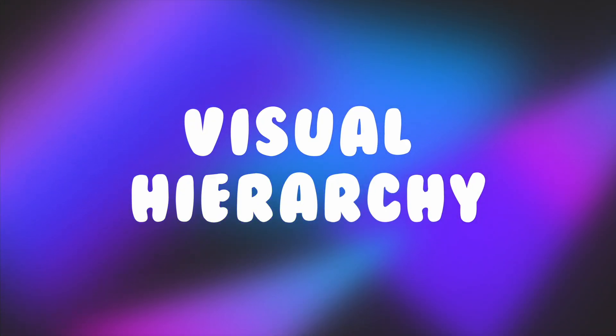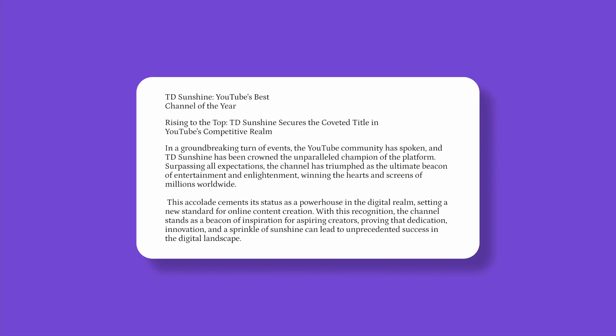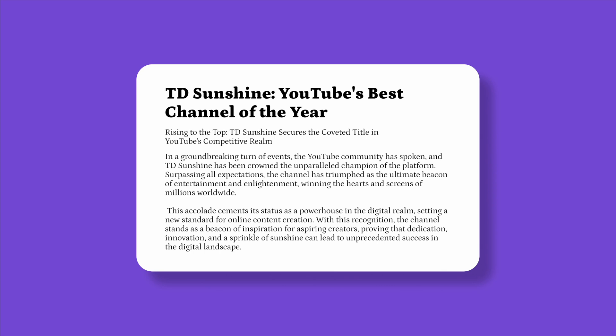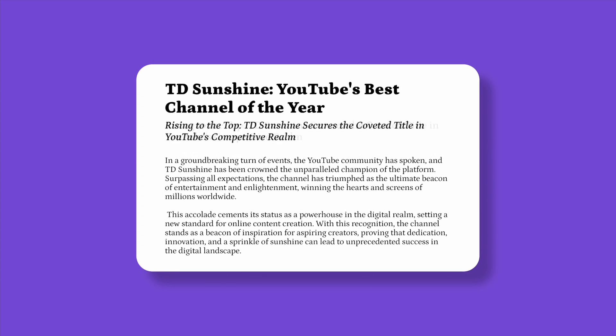Visual hierarchy, our third principle, is like a roadmap for guiding the user's attention through your interface. It involves emphasizing the most important elements using design elements like color, size, contrast, and typography. On a news website, the main headline in a larger, bold font immediately captures the user's attention — it's visually dominant, signaling it's the primary piece of information. Subheadings use a slightly smaller but still bold font, while smaller body text provides detailed information. Visual hierarchy is a powerful tool for ensuring users focus on what matters most.